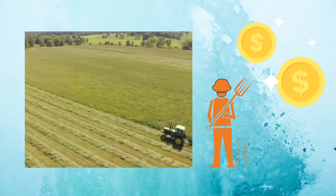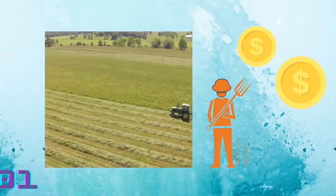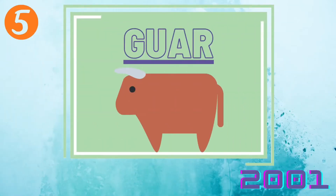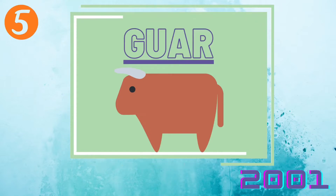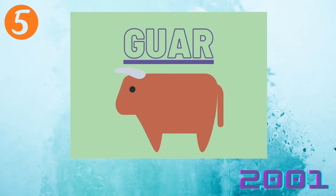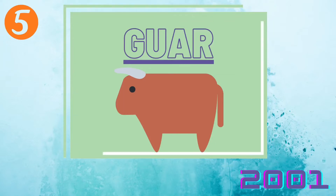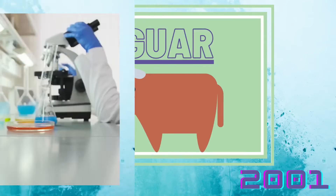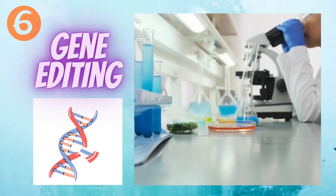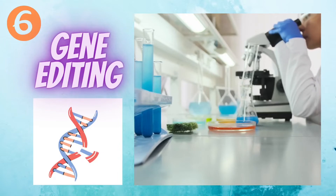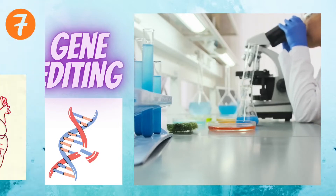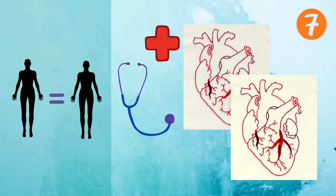Fifth, clones of endangered or even extinct species can also be created. Researchers cloned an endangered species for the first time — a gaur, which is a type of Asian ox — in 2001. Sixth, cell cloning would also benefit genetic research by assisting scientists in gene editing.